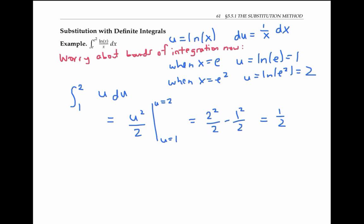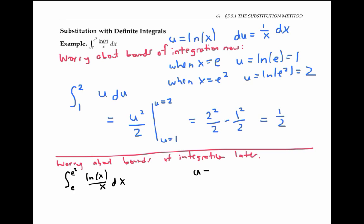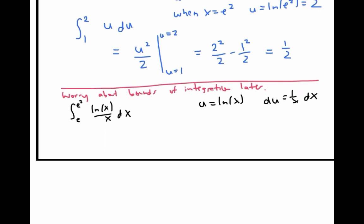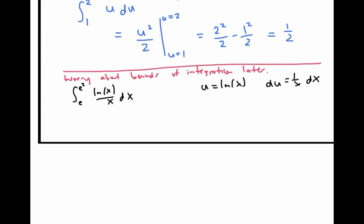The second way of dealing with the bounds of integration is to worry about them later. Let's go back to the beginning of the problem, where we were just about to substitute u equals ln x and du equals one over x dx. Instead of substituting in for the bounds of integration, I'm going to temporarily ignore them and just evaluate the indefinite integral ln(x)/x dx, which I can substitute in as u times du.